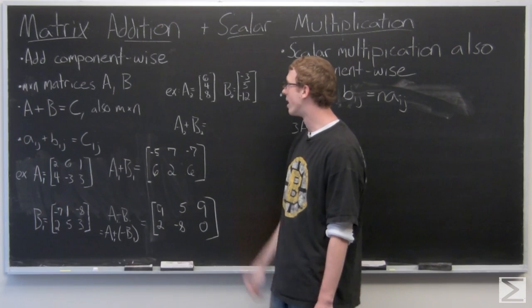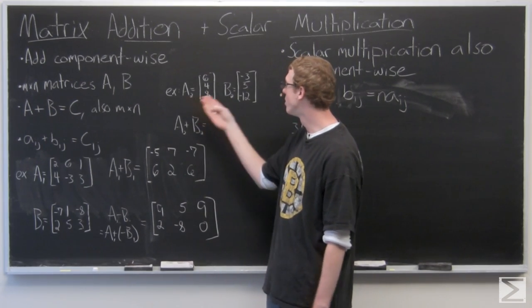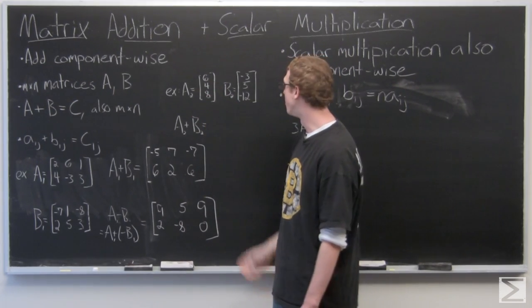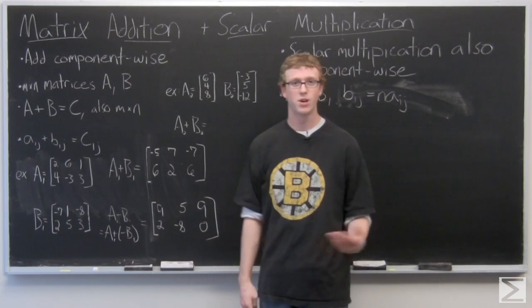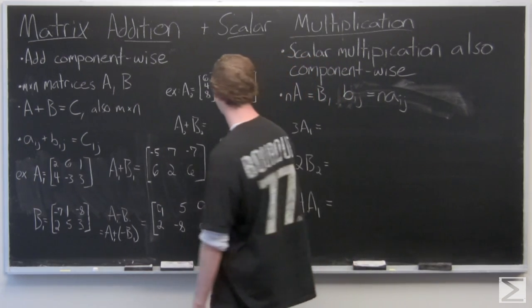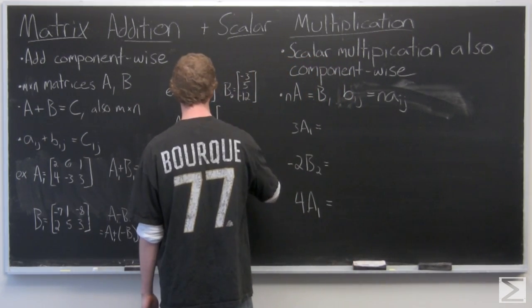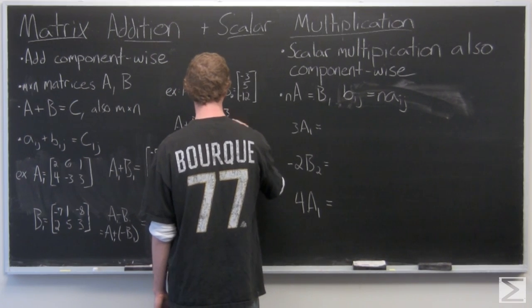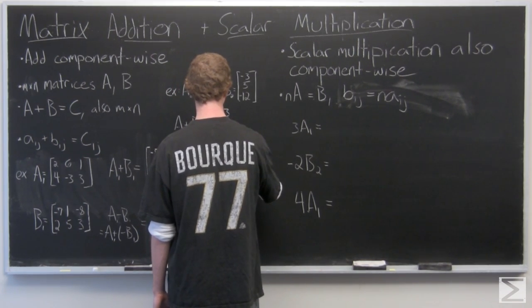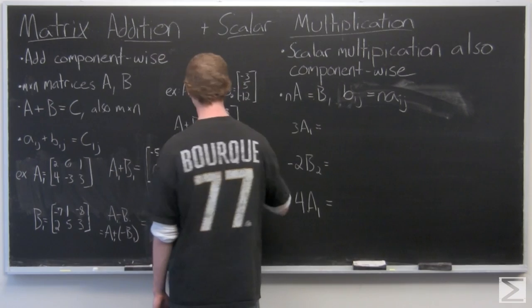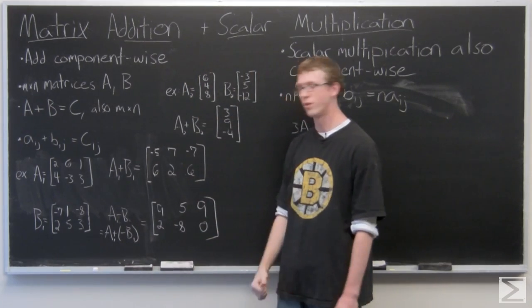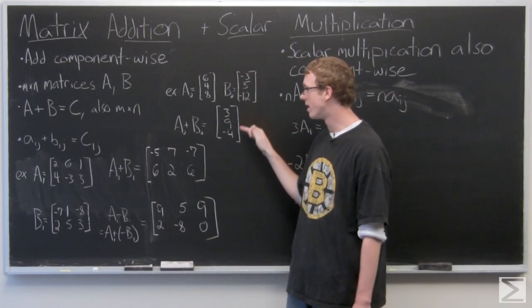I'll take another look at a 3 by 1 matrix here, A2: 6, 4, 8, and B2: negative 3, 5, 12. Again, just add component-wise. And the resultant matrix is also a 3 by 1 matrix: 3, 9, negative 4.